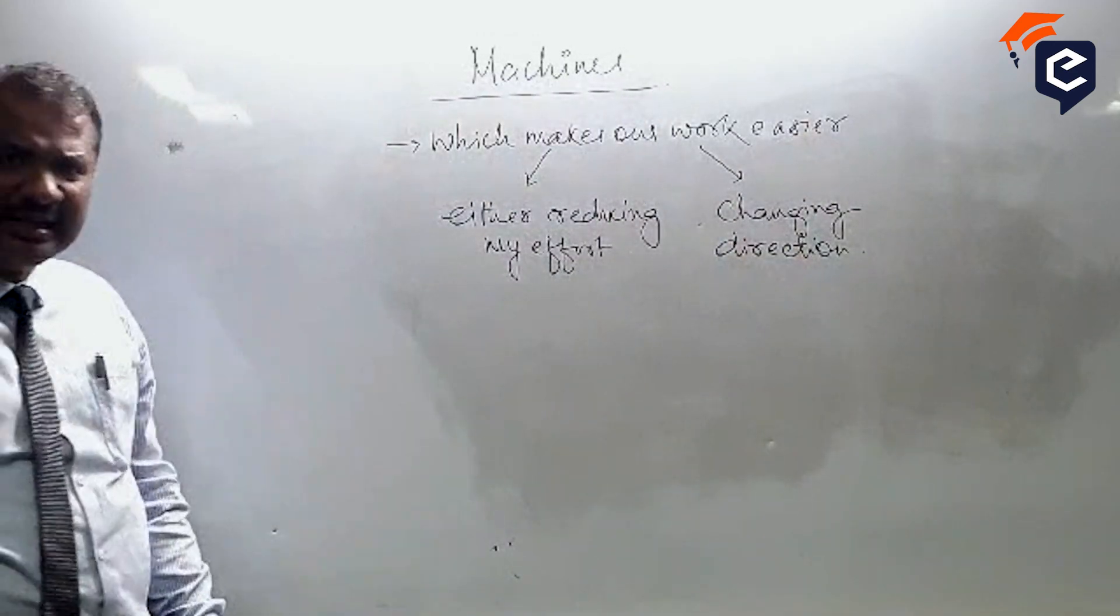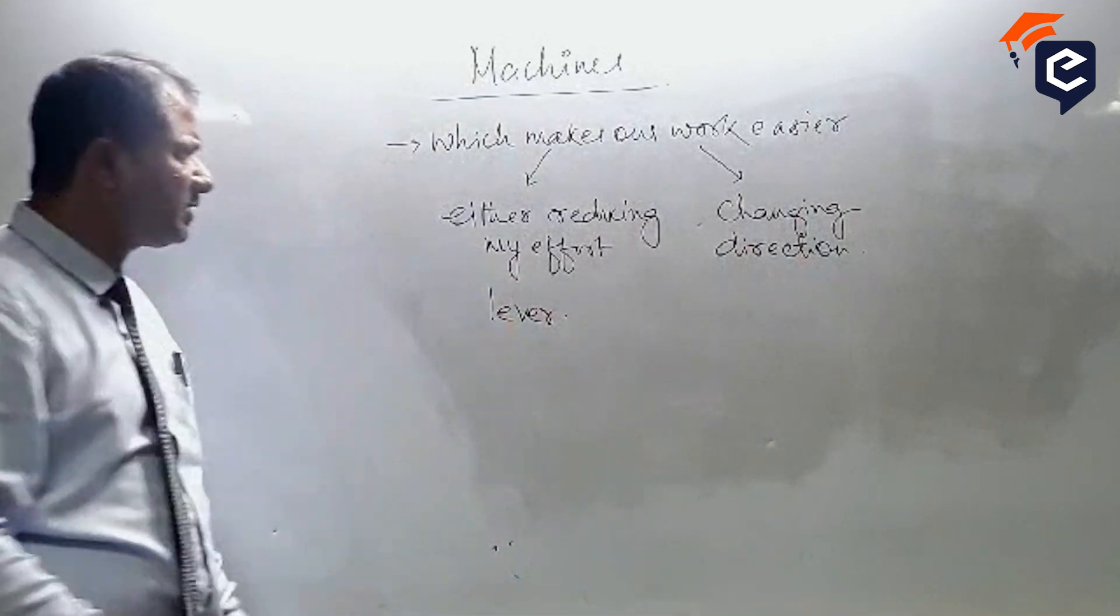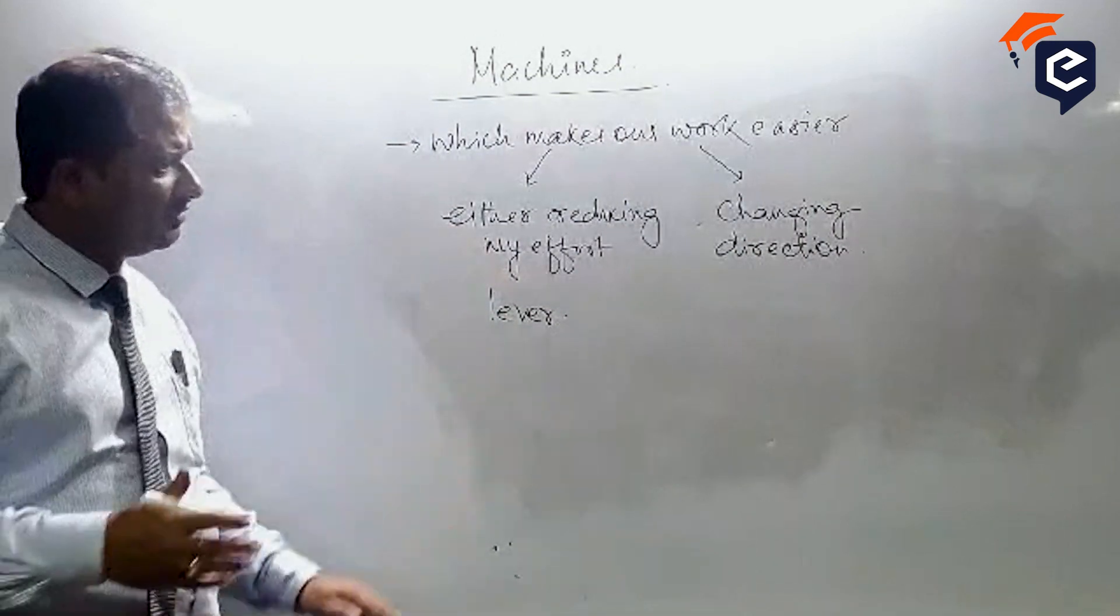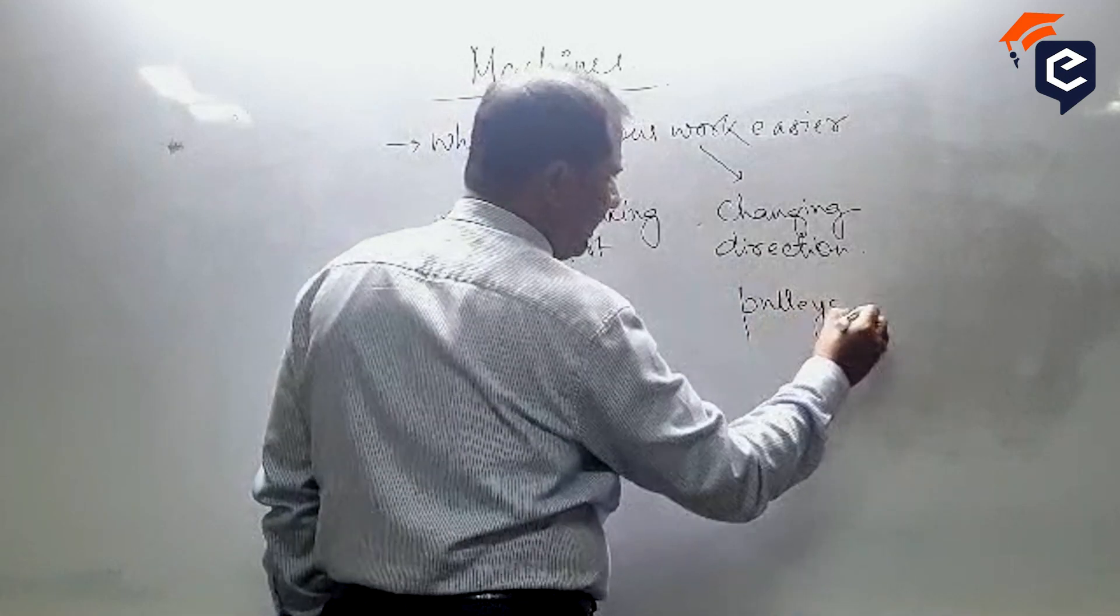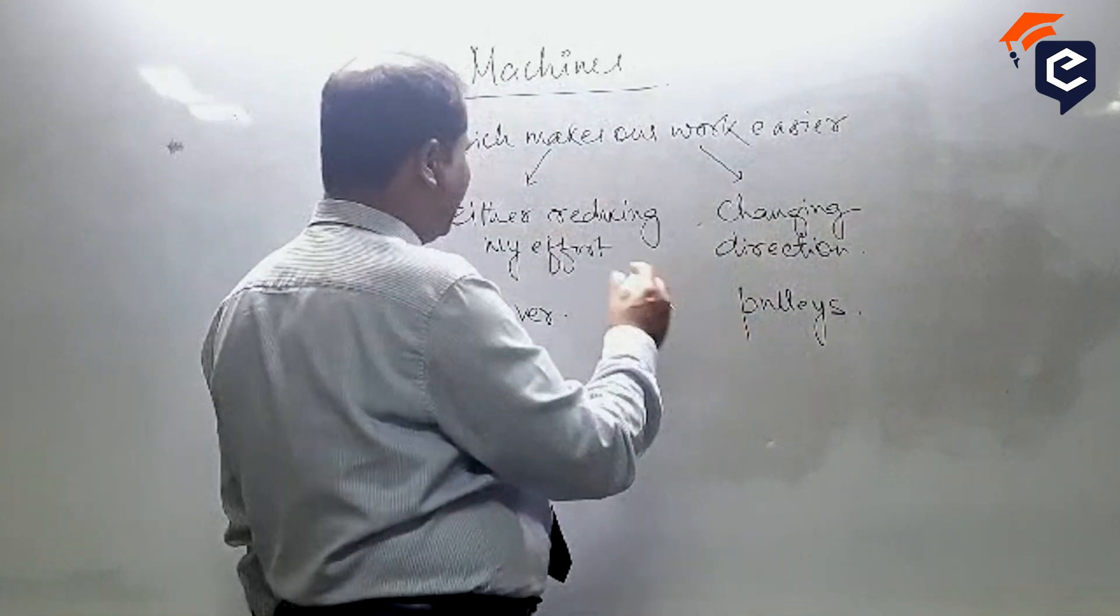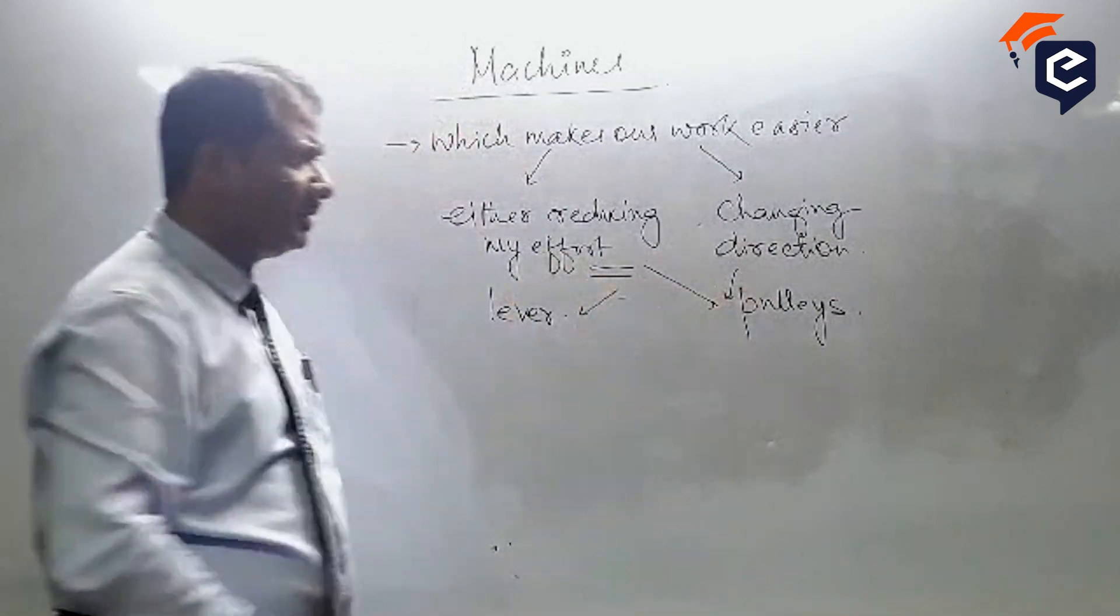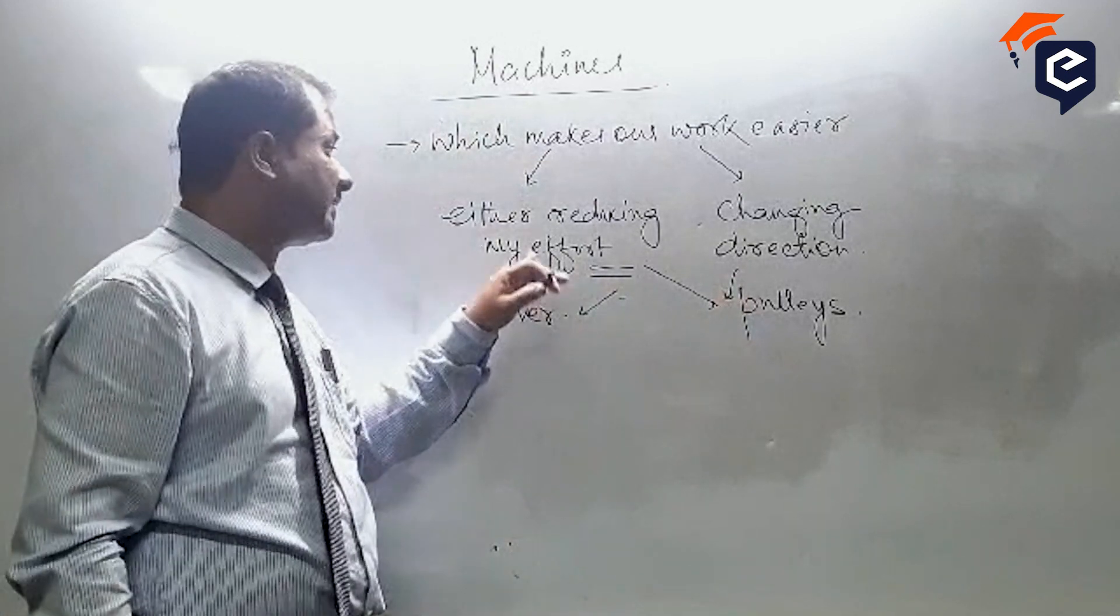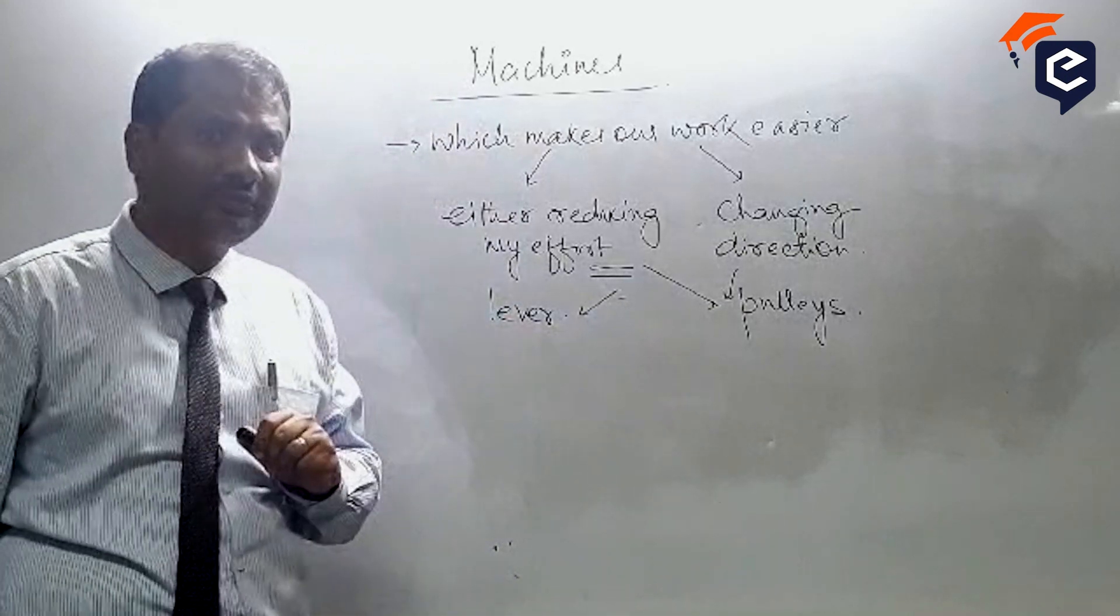For example, levers are used to reduce effort. Pulleys are used to change direction as well as reduce effort. Levers also help reduce effort by changing the direction of the application of effort.